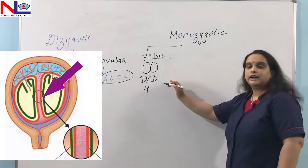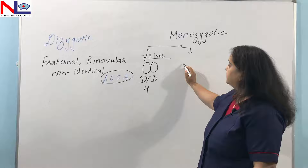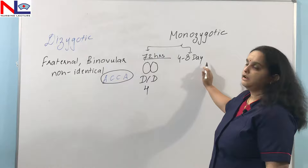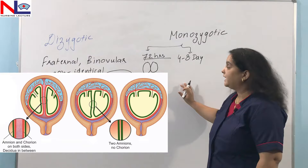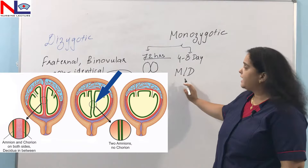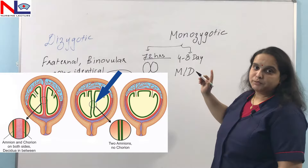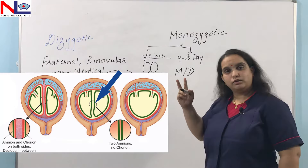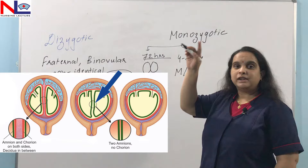If division takes place between four to eight days after fertilization, the variety is MD — monochorionic diamniotic. By that time the chorion has already developed, so only the amniotic cavities differ: there is one chorion and two amnions. The intervening membrane between the two fetuses is only two layers, and the chorion is completely shared.